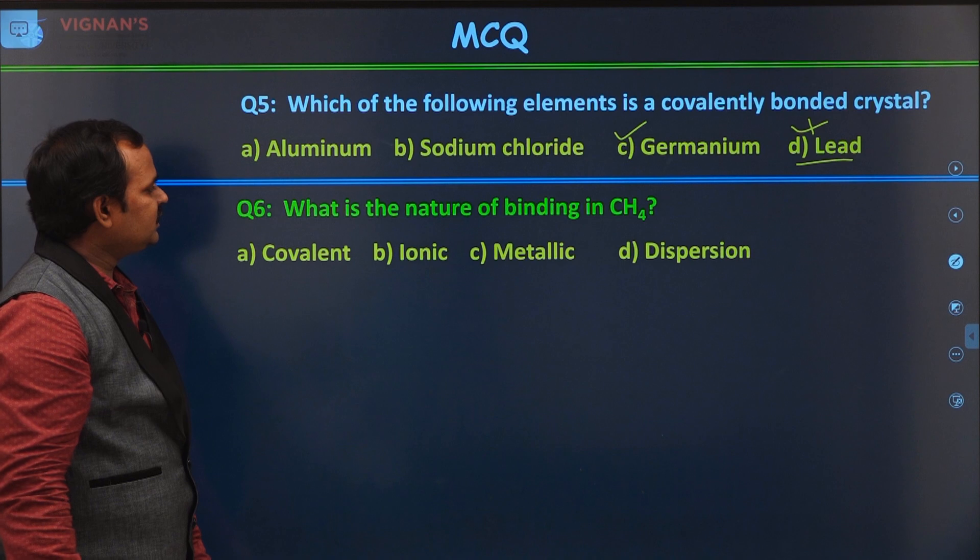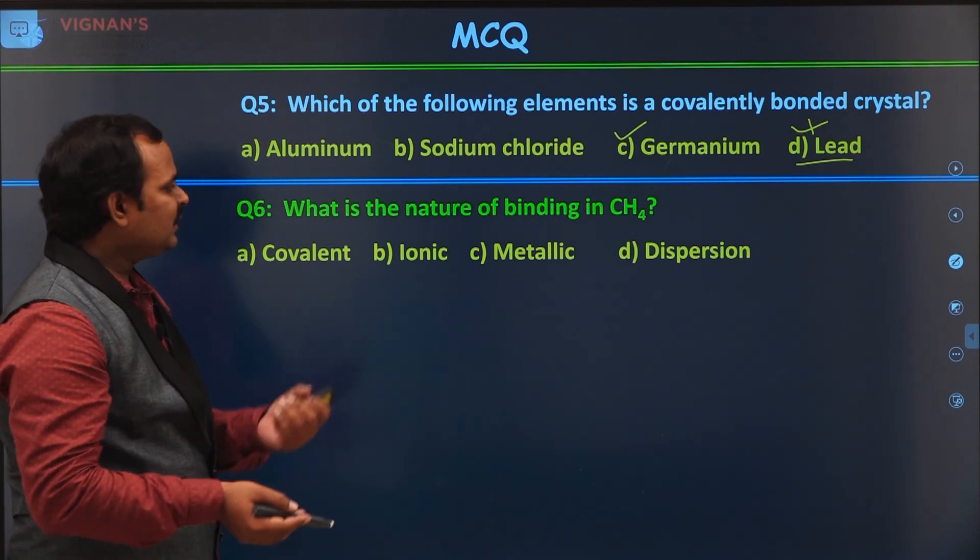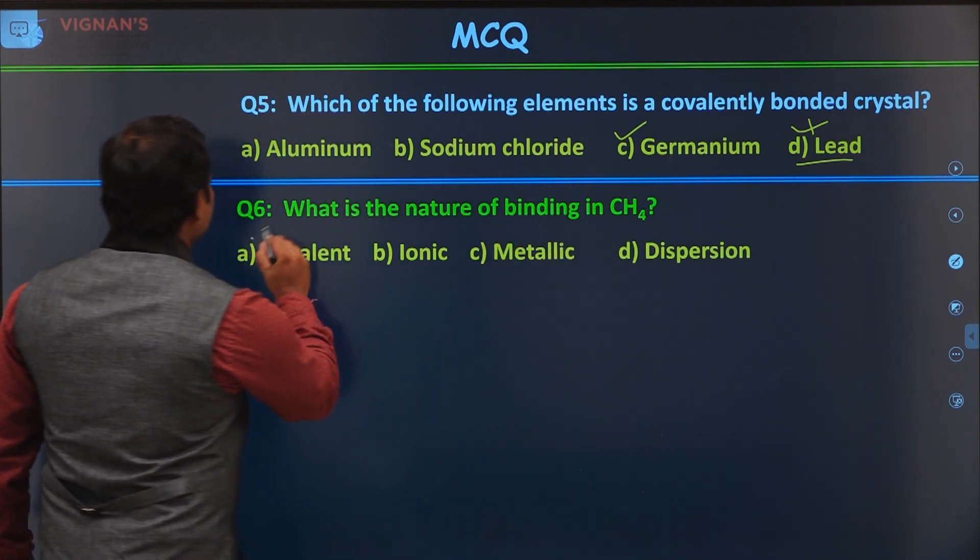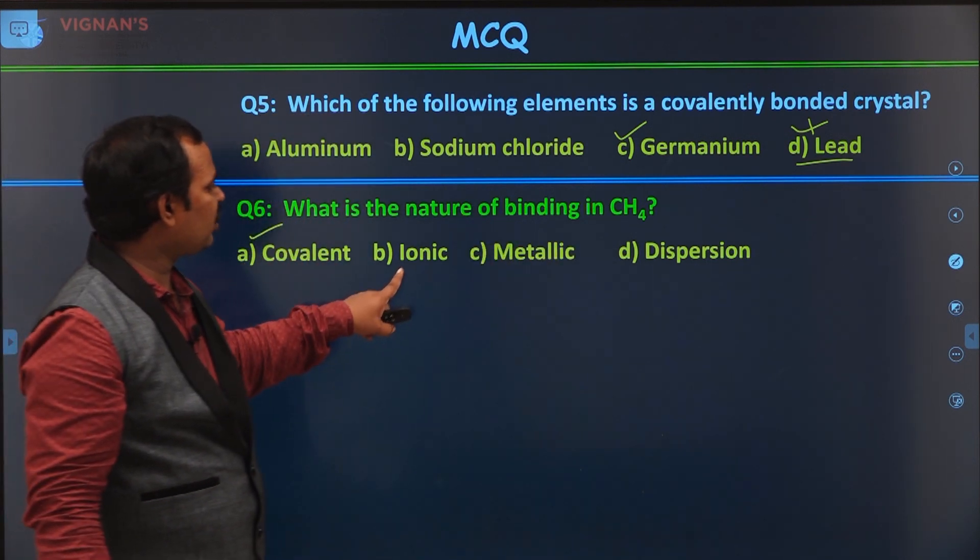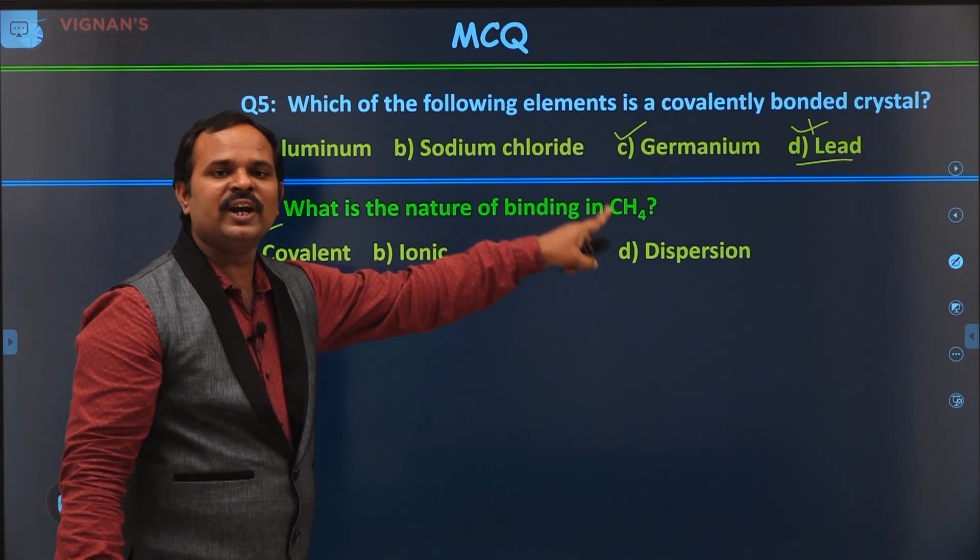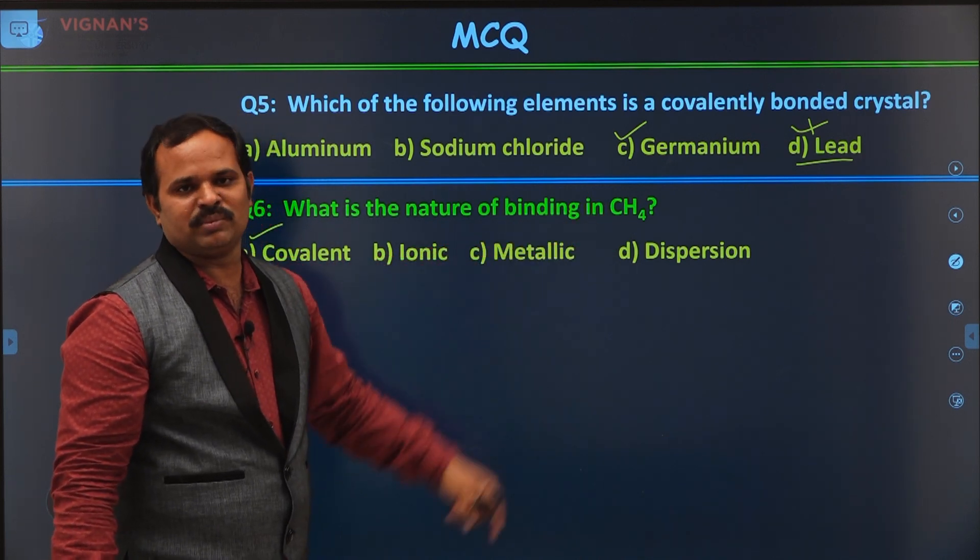And the sixth question is, what is the nature of bonding in CH4? In CH4, this is a covalent bond. This is not an ionic bond, metallic bond, or dispersion bond. Between hydrogen and carbon, between hydrogen and oxygen, they are all covalent bonds.